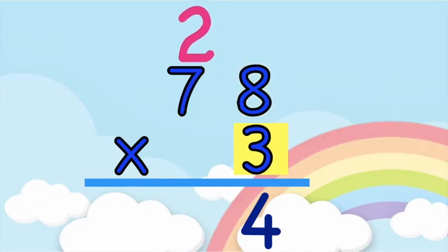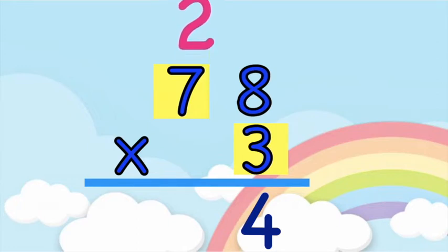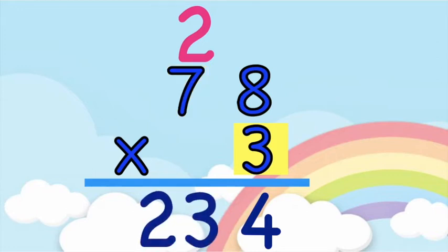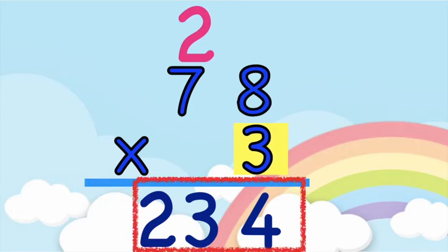Let's multiply 3 and 7. 3 times 7 — 3, 6, 9, 12, 15, 18, 21. So 3 times 7 is equal to 21, then add 2. 21 plus 2 — good job, that is 23. So the product of 78 and 3 is 234.